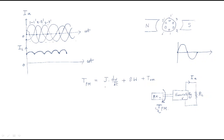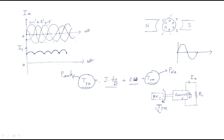The complete prime mover torque should satisfy the electromagnetic torque. This prime mover torque is nothing but the given mechanical power taken from the prime mover, and it must satisfy the remaining conditions: J d-omega/dt and b-omega. The complete prime mover torque will be divided accordingly. Here T_pm is the prime mover torque.